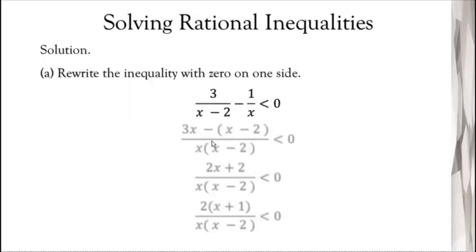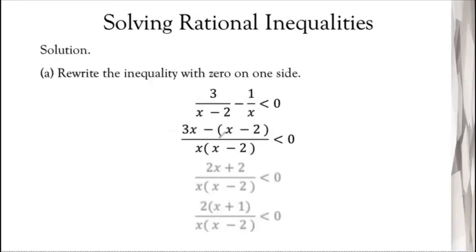After that, we notice the left side now has 2 terms, so we need to rewrite that into 1 term so we can find where x equals zero — that's important for placing values on the number line. The LCD of the 2 terms is x(x-2), since no other factor divides both denominators. So the denominator becomes x(x-2): (x-2) cancels out, leaving x times 3, giving us 3x for the first term in the numerator.